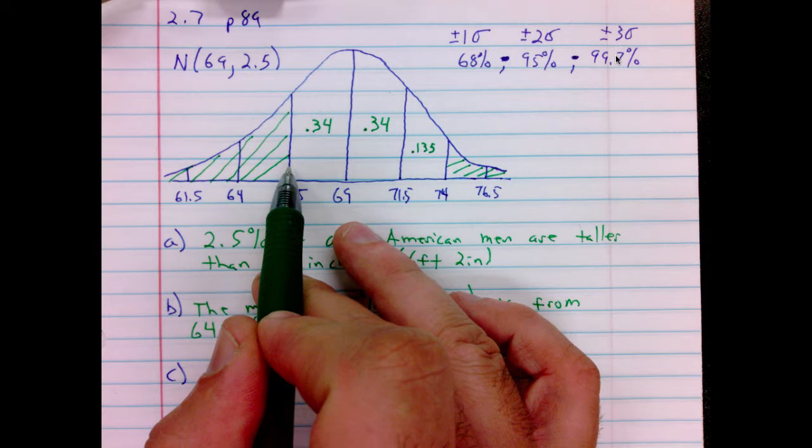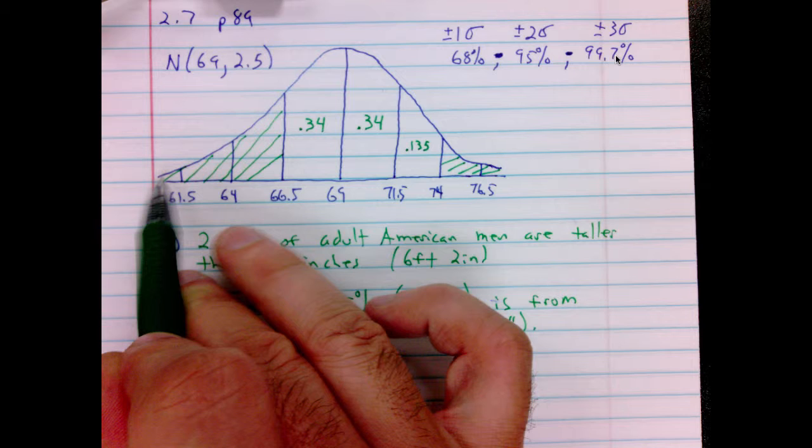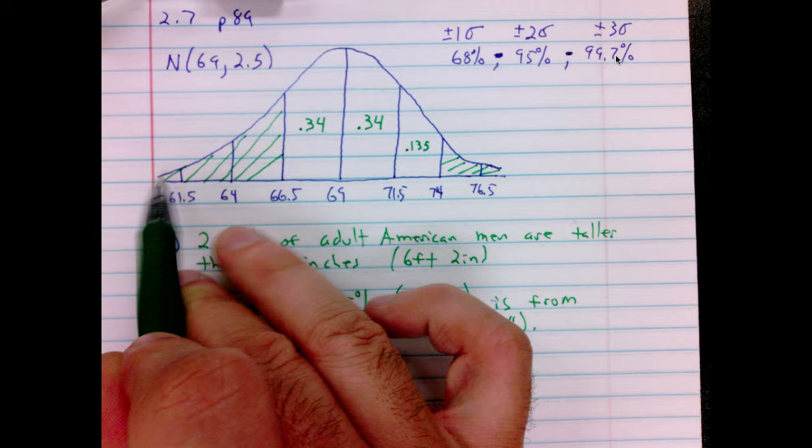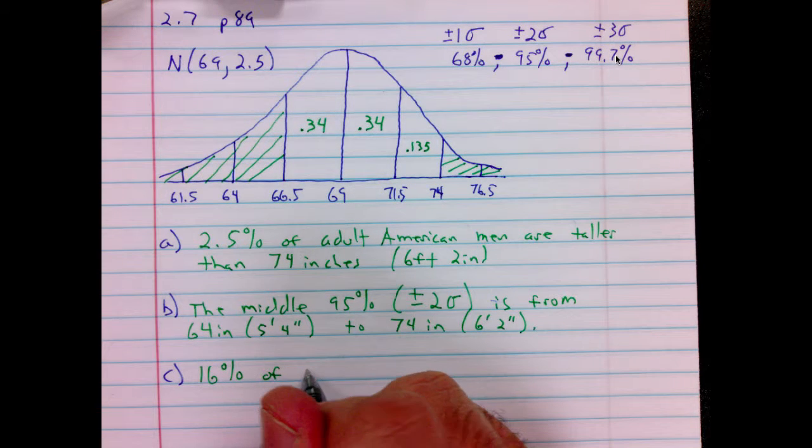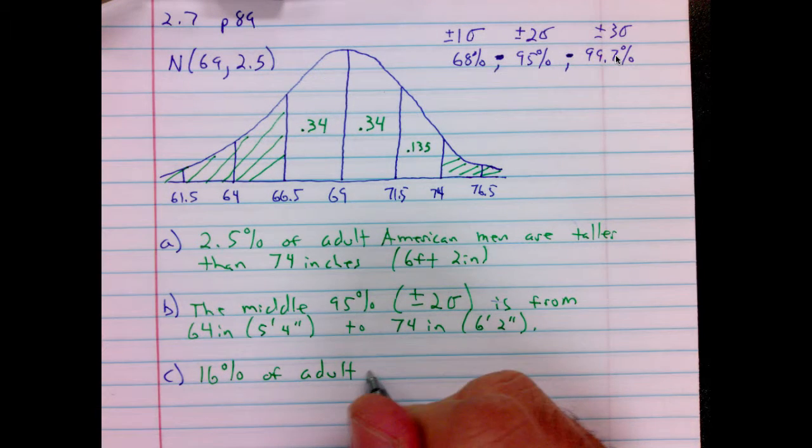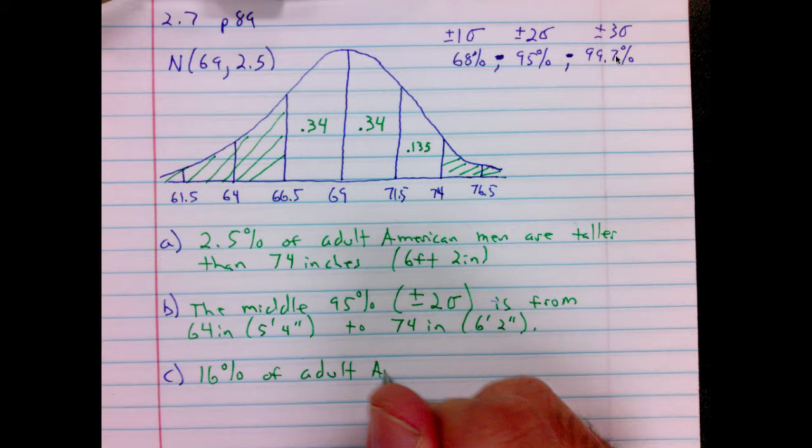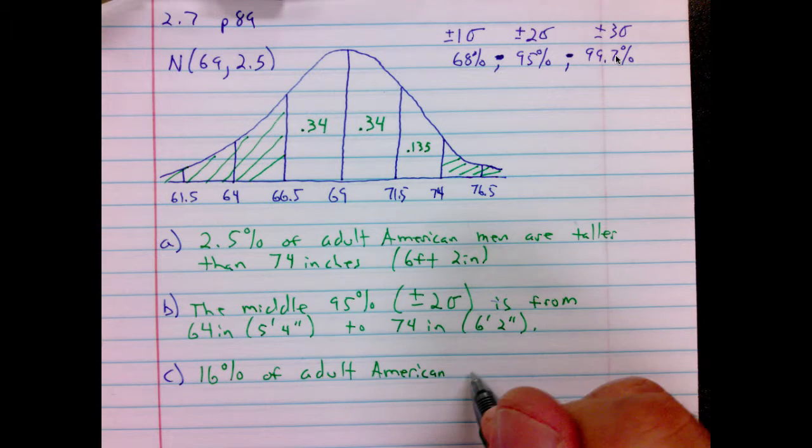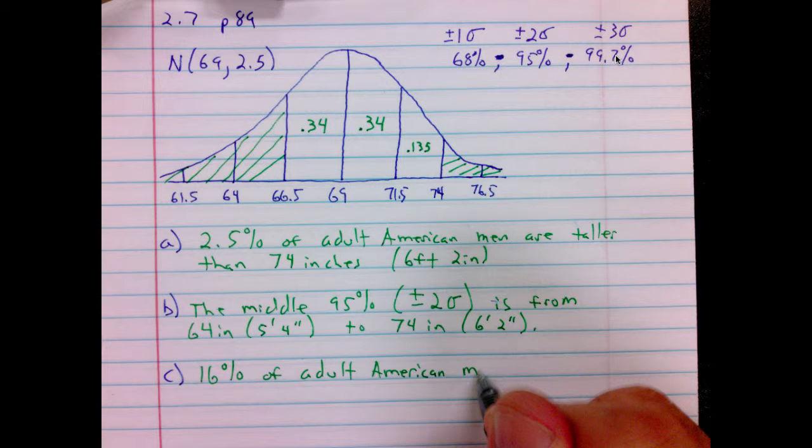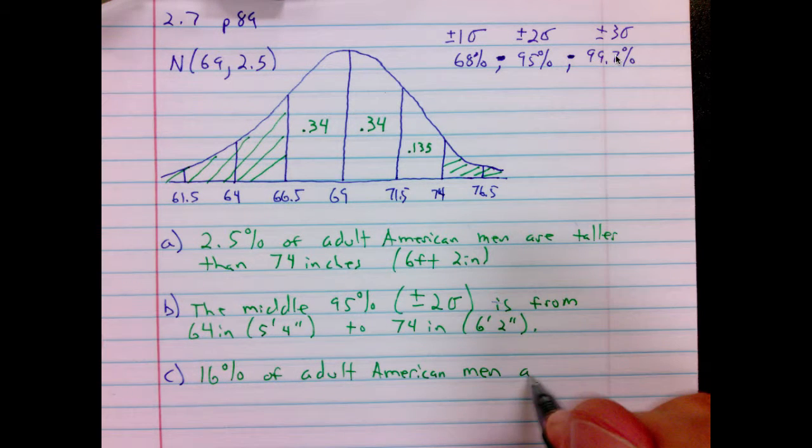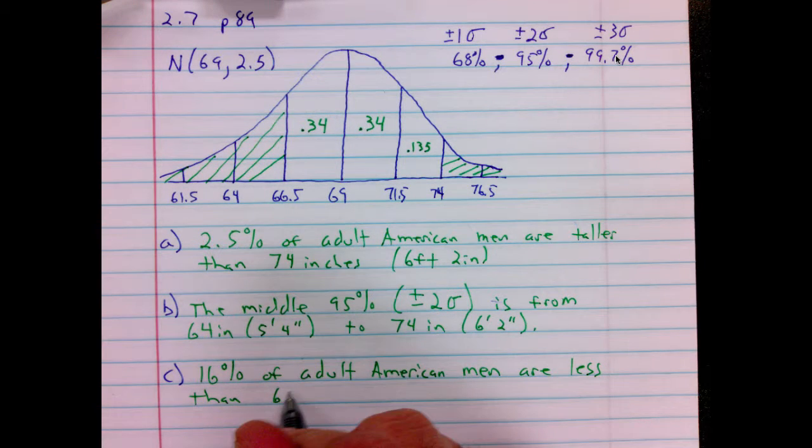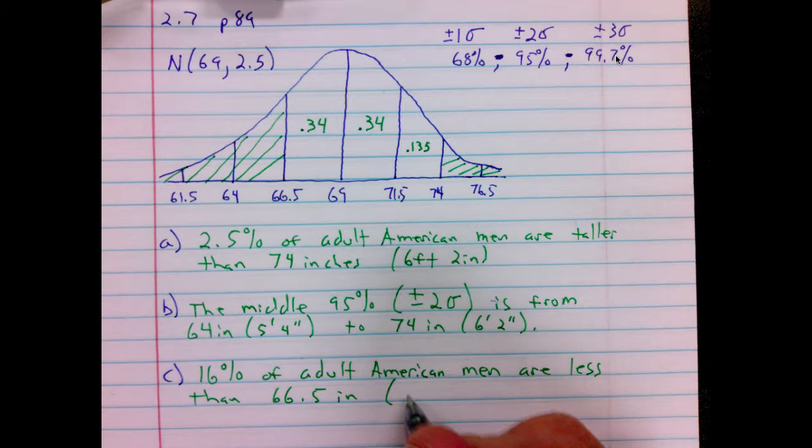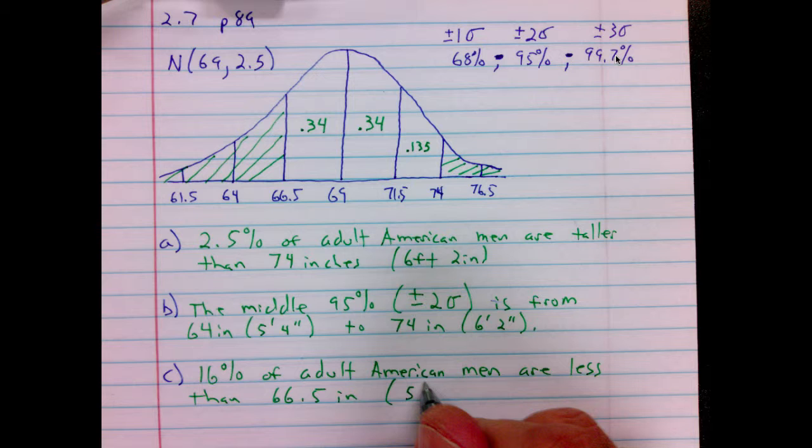16% of adult American men are less than 66.5 inches, and that is 5 foot 6.5 inches.